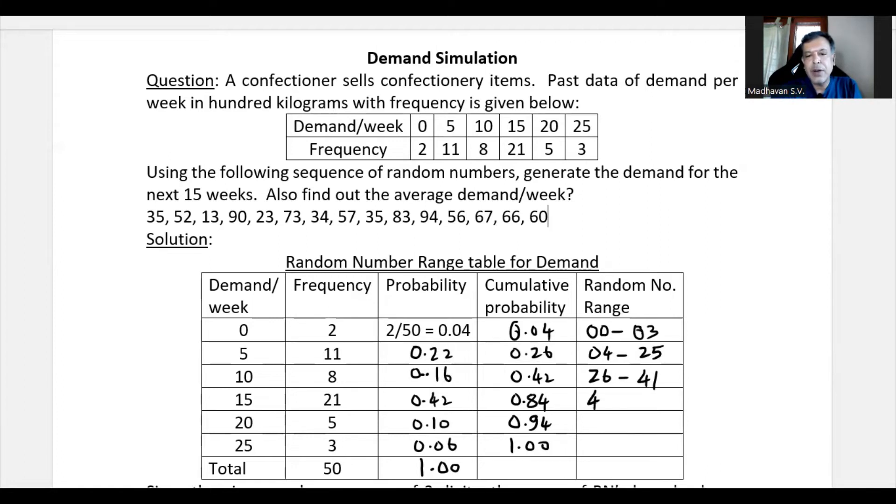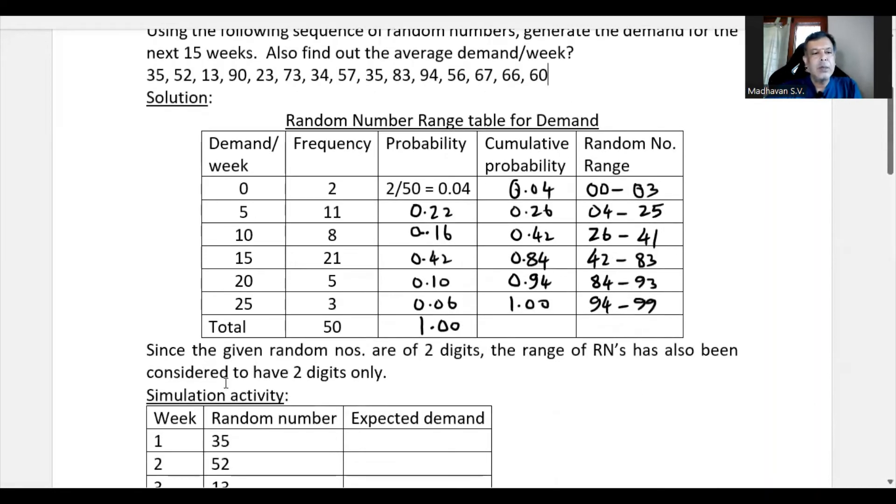So similarly, here it is 42 to 83. This will be 84 to 93 and this will be 94 to 99. We may notice that it is starting from 0.0 and ending with double 9 which means totally there are 100 random numbers. We need for the cumulative probability of 1 which is nothing but 100%. We need 100 random numbers. That is why this is 0.0 to 99. Since the given random numbers are of two digits, the range of random numbers has also been considered to have two digits only.